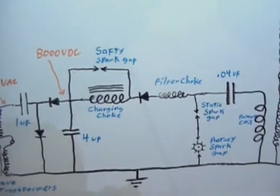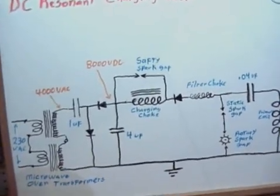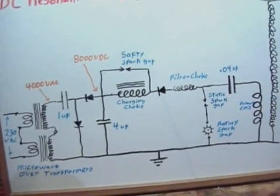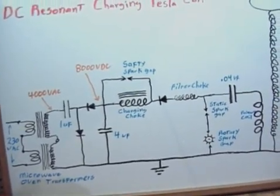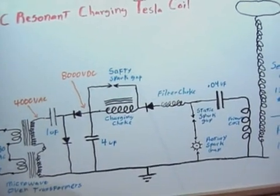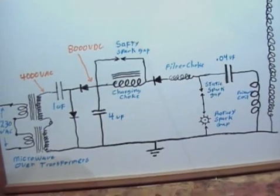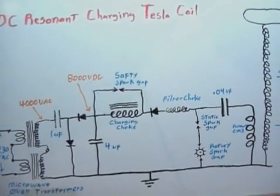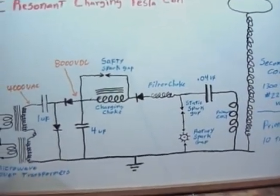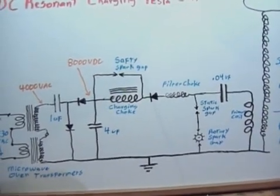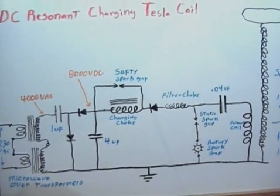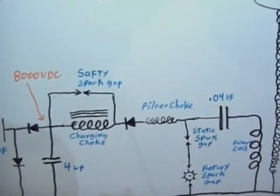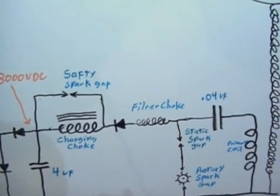In practice the value of the charging choke inductance wise can be much higher than the theoretical resonant value, which would mean your current flow would tend to be relatively constant. I've experimented with a lot of different values for the charging choke and it all seems to work out about the same, as long as your charging choke is of a fairly high value.